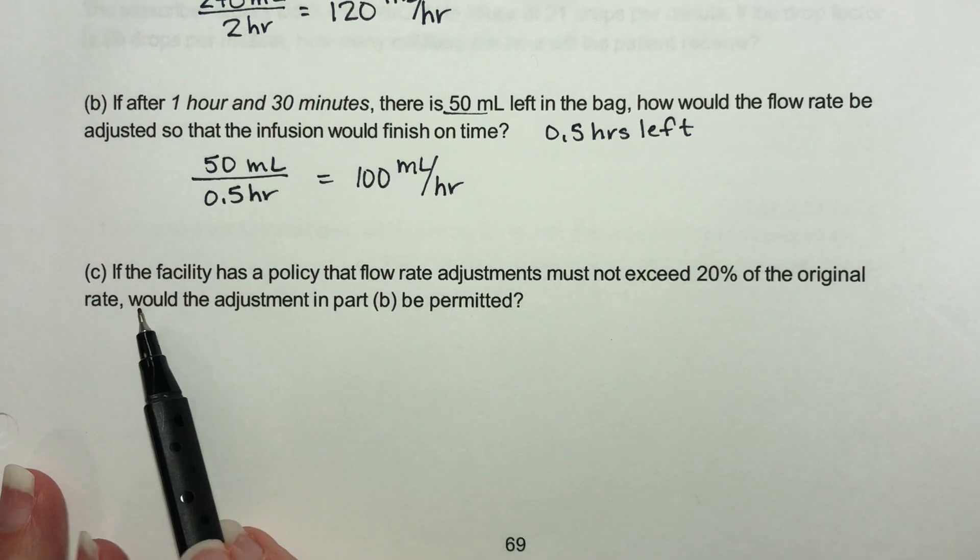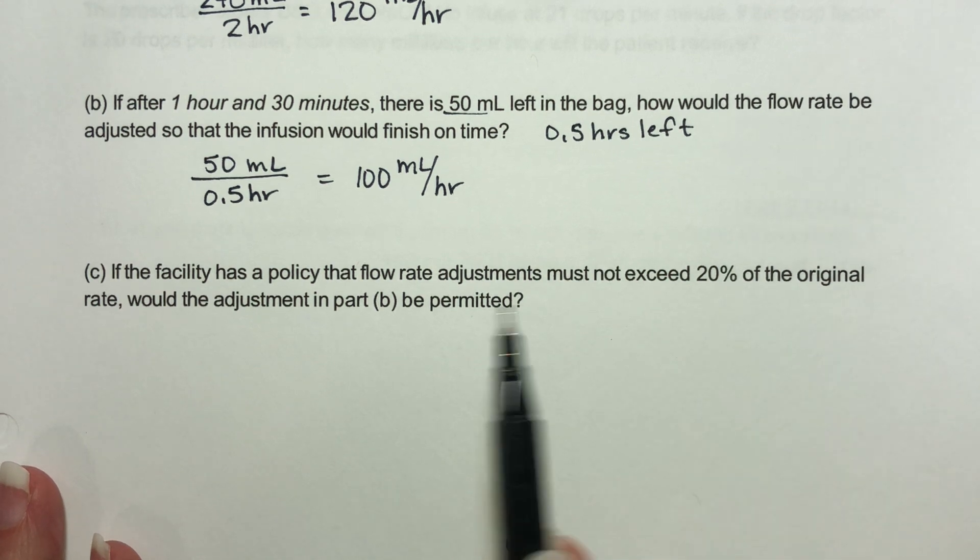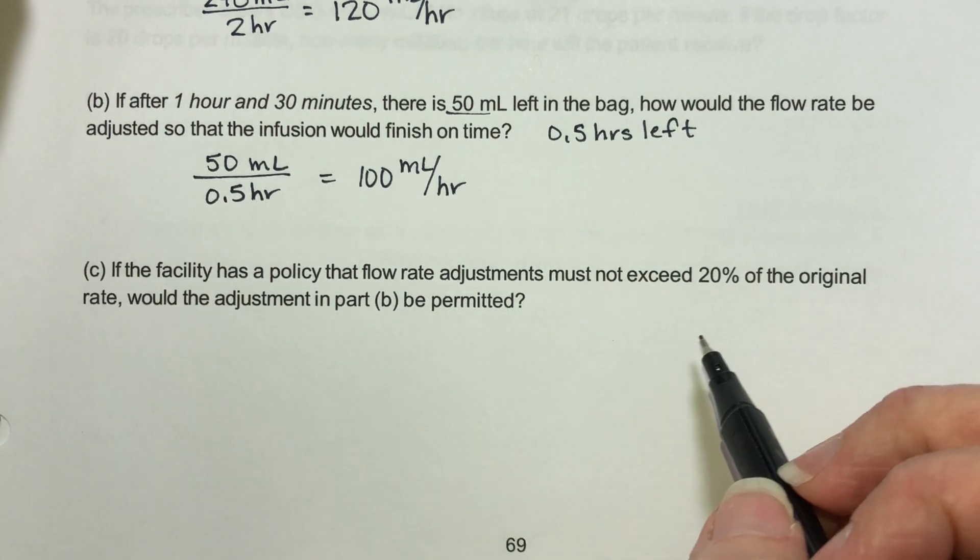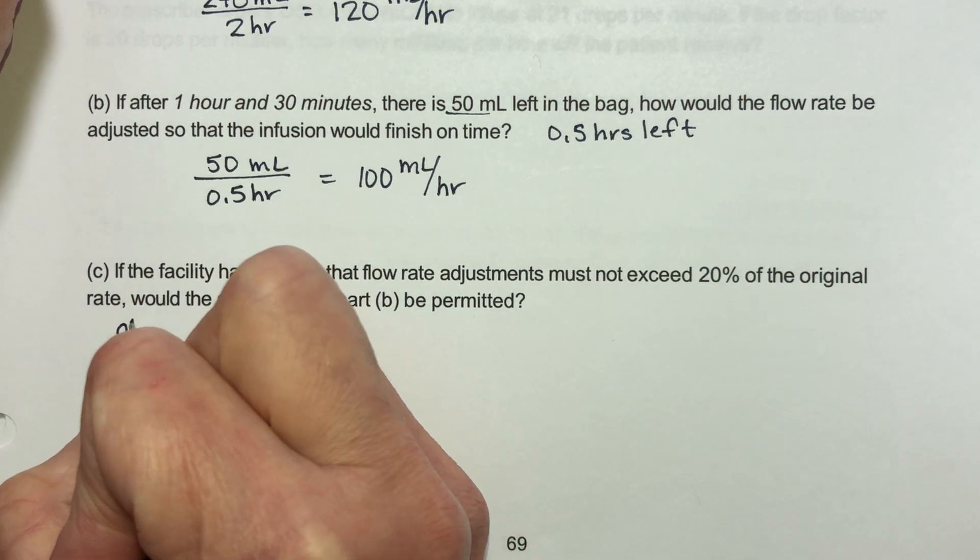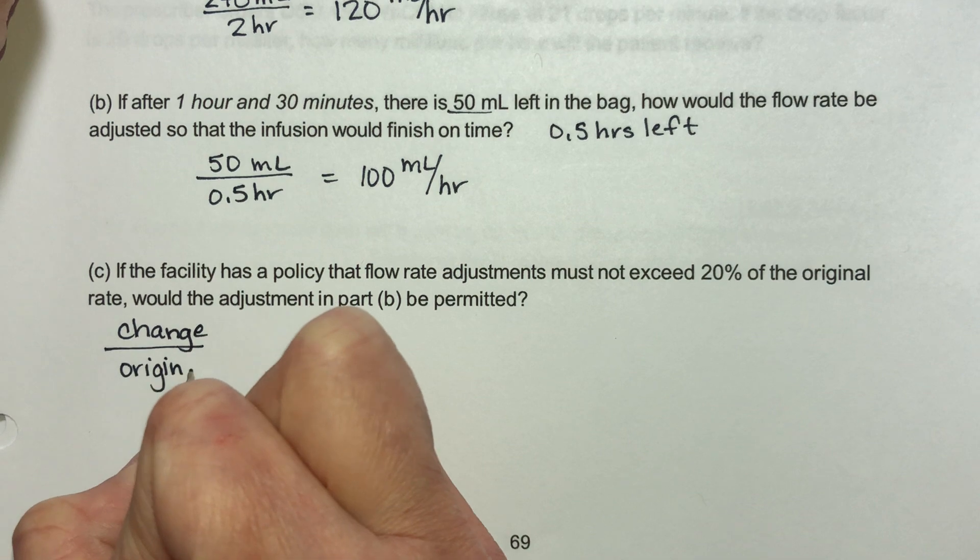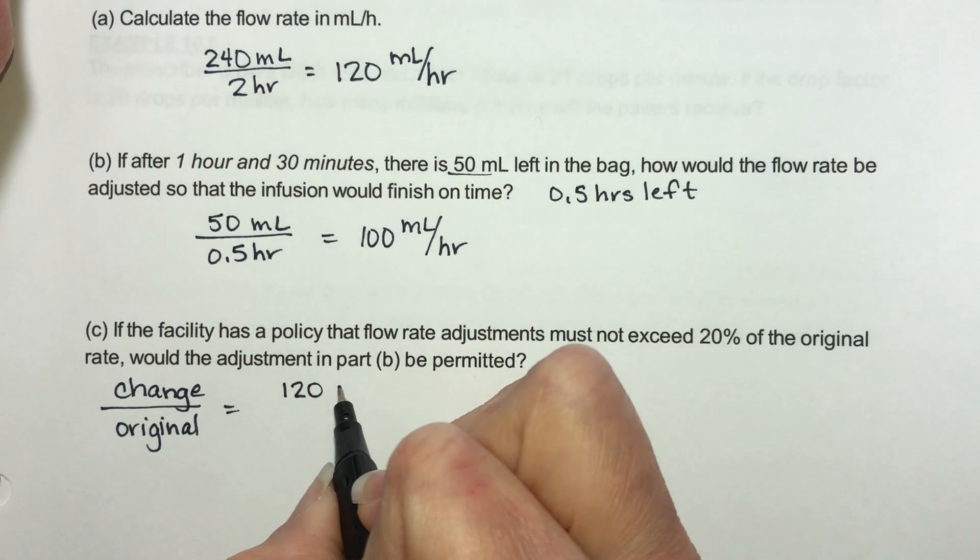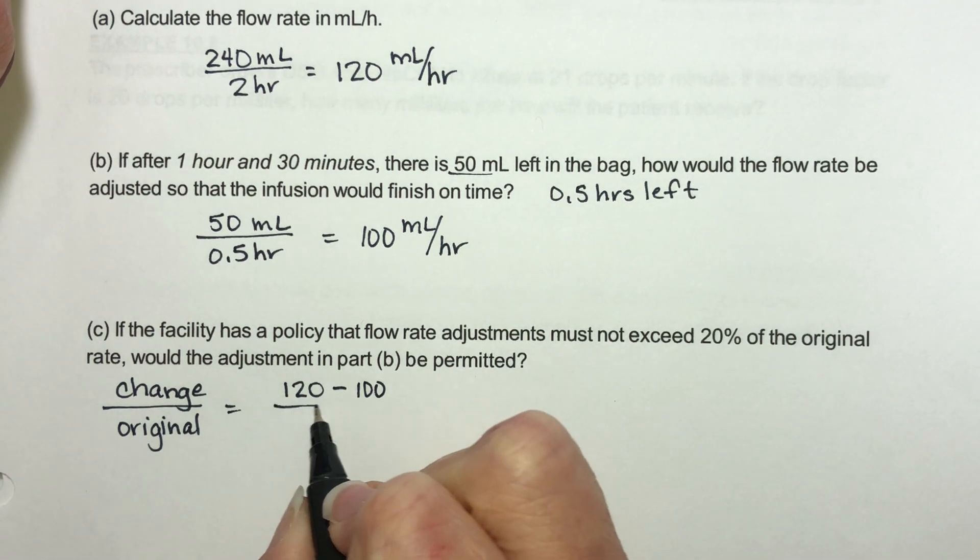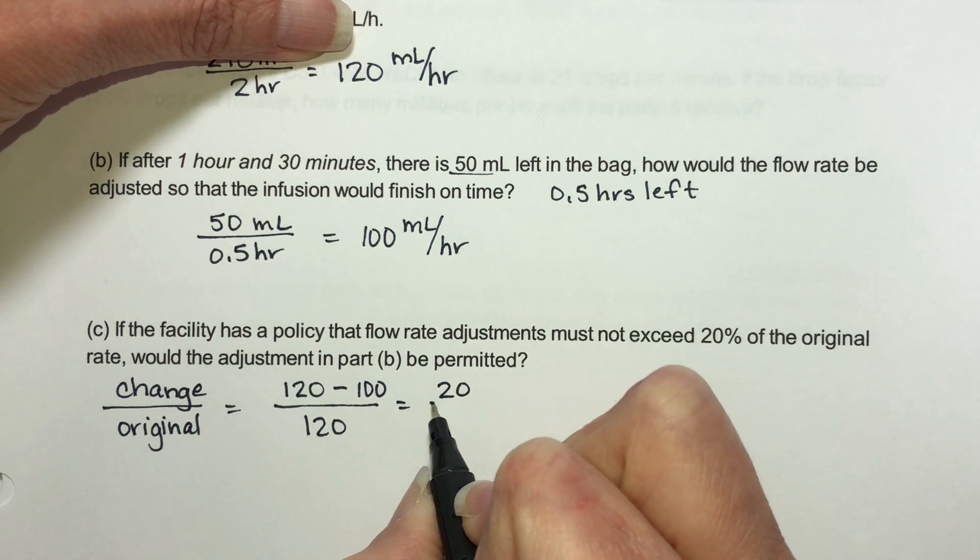Now, if your facility has a policy that flow rate adjustments must not exceed 20% of the original rate, would this adjustment be permitted? Early on in the class, we talked about percent increases and percent decreases. And what we look for is the change over the original. So to find the change, we're going to just subtract. I was at 120 and I changed to 100. So that's going to be a change of 20. The original flow rate was 120. So this is 20 over 120.